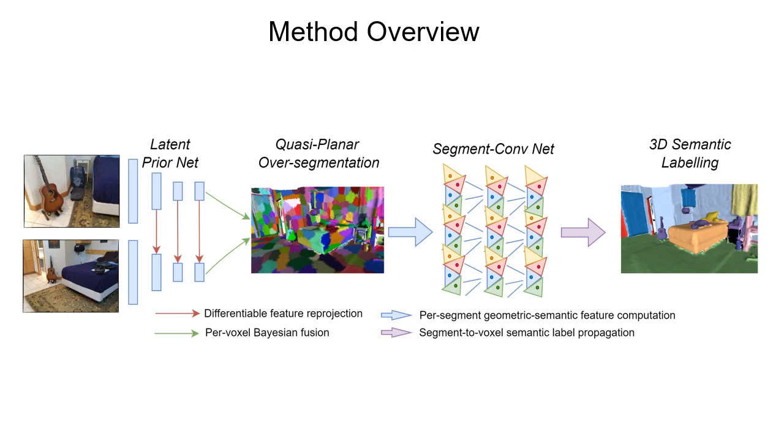Second, quasi-planar over-segmentation groups the surface voxels into segments associated with segment class probabilities and geometric features.